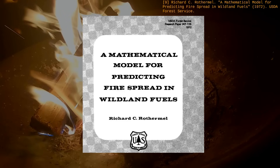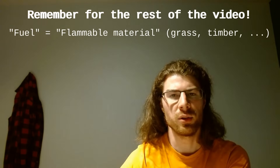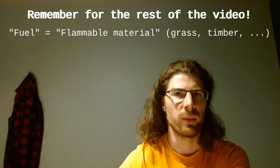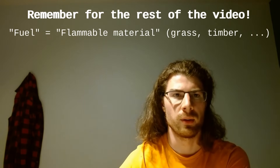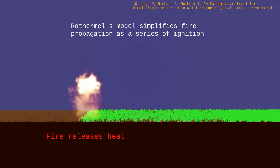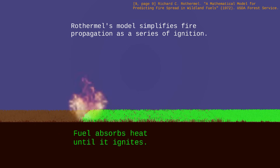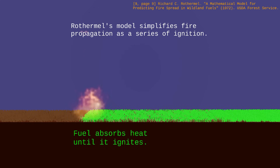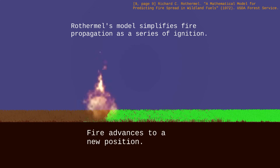In 1972, Richard Rothermel, a USDA Forest Service scientist, developed a surface fire spread model. It simplifies wildfires into a uniform fuel bed — in that context, fuel just means flammable material that can be grass or timber. Fire burns fuel, which releases energy that heats up neighboring fuel until it reaches its ignition temperature, at which point it itself starts burning and the fire propagates forward.